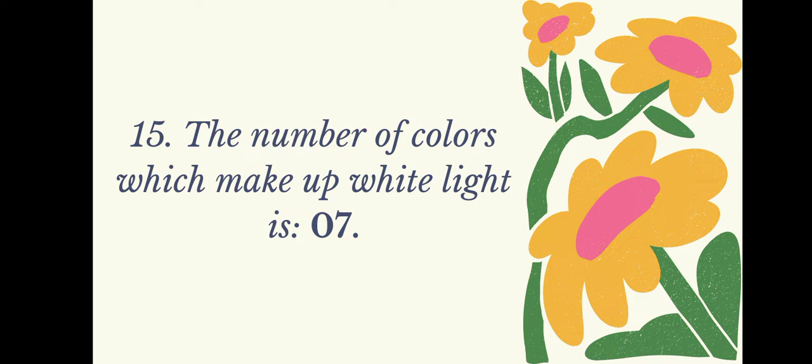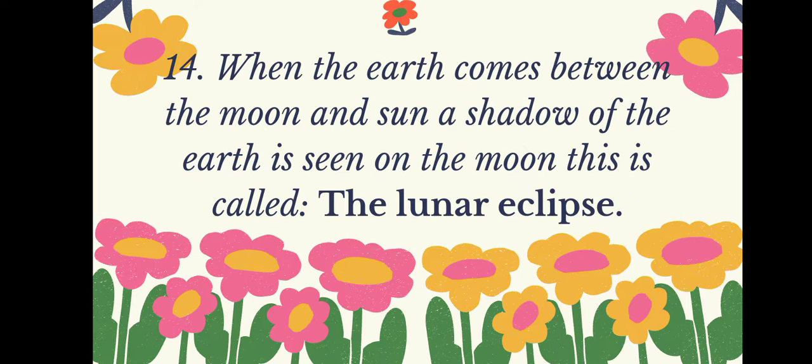The number of colors which make up white light is seven. When the Earth comes between the Moon and Sun, a shadow of the Earth is seen on the Moon — this is called the lunar eclipse.